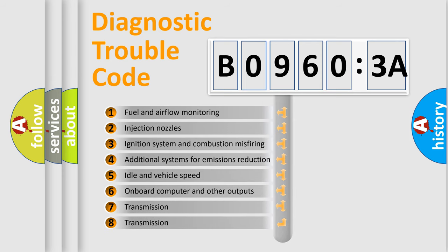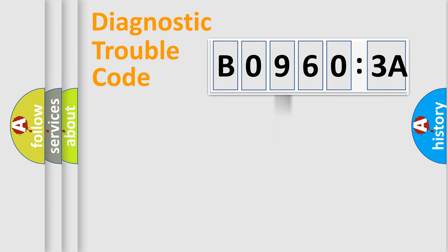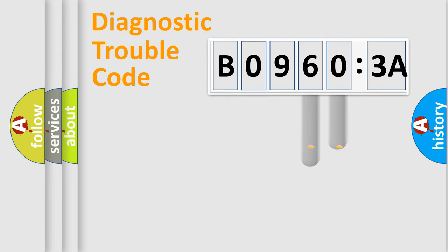The third character specifies a subset of errors. The distribution shown is valid only for the standardized DTC code. Only the last two characters define the specific fault of the group.